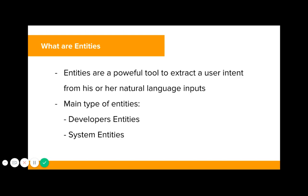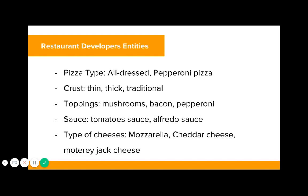So what are entities? Entities are a powerful tool to extract a user's intent from their natural language input. There are mainly two types: developer entities that you develop yourself, and system entities. An example of restaurant developer entities for pizza: you could have the type of pizza like Aldresso or pepperoni, for the crust — thick, thin, or traditional — toppings like mushrooms, bacon, pepperoni, sauces like tomato sauce or alfredo sauce, and all types of cheeses like mozzarella, cheddar, and Monterey Jack.